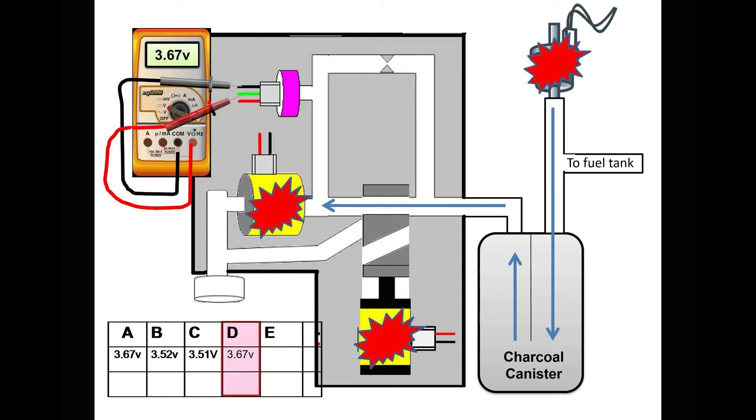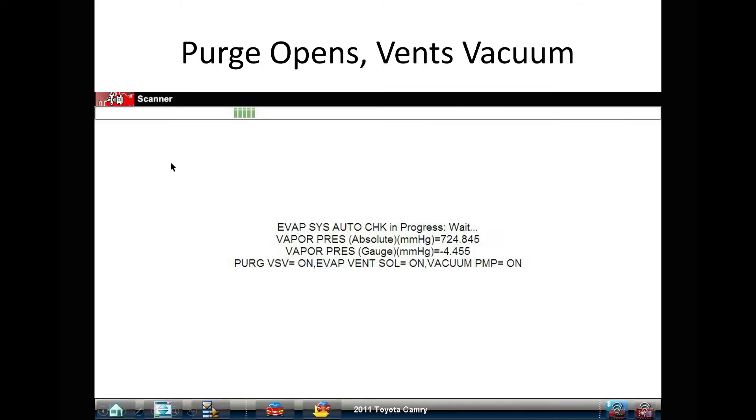The pressure sensor should see a vacuum drop in the tank. Purge valve on, vent valve on, vacuum pump on, and weak vacuum - 4.4, almost four and a half inches of water column. I just went from almost 21 inches to 4.4, so fresh air entered the tank. Purge valve works.